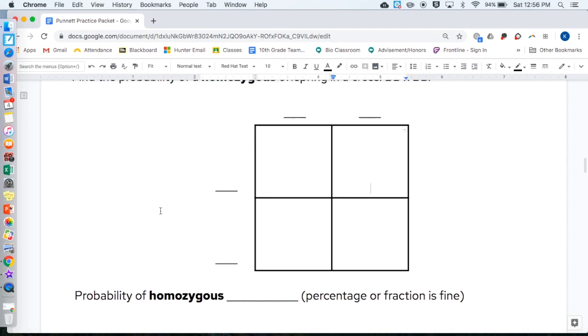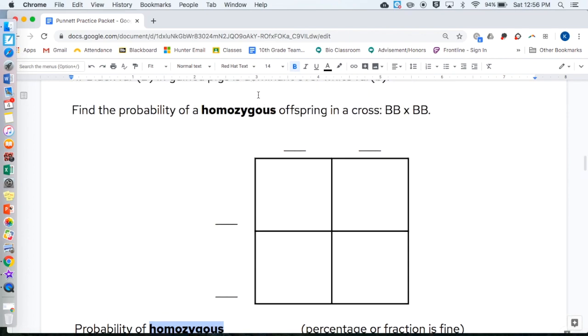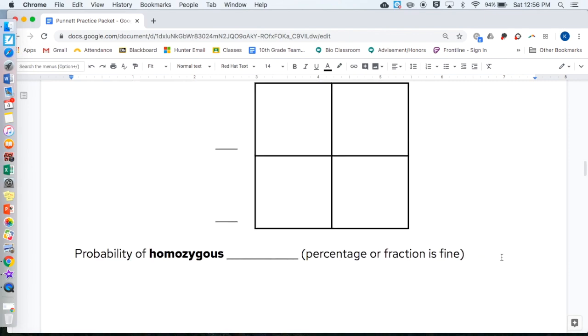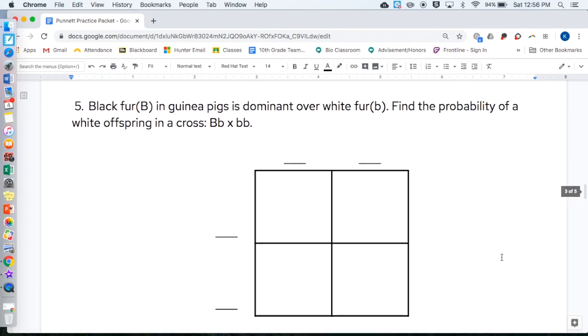And from that Punnett square, determine the probability of a homozygous offspring, meaning figure out what homozygous means, what percentage or fraction, so one out of four, two out of four, three out of four, or four out of four, or 25%, 50%, 75%, 100%, or even zero percent, is homozygous based on this chart. If you're stuck on these words, go to the Punnett square tutorial video or back to your lesson. Black fur, or Google it.